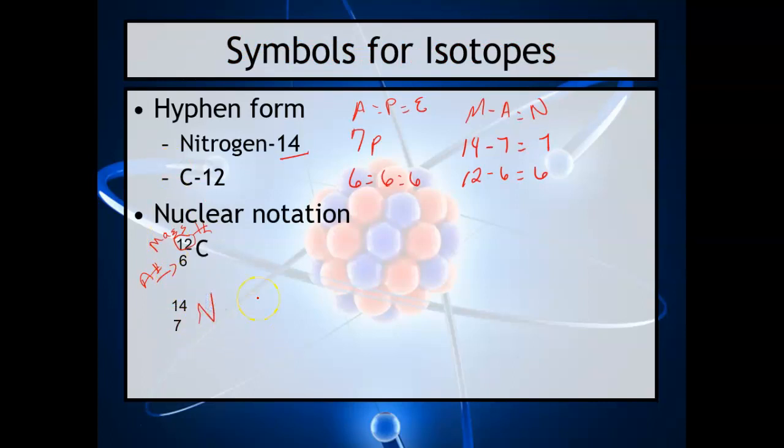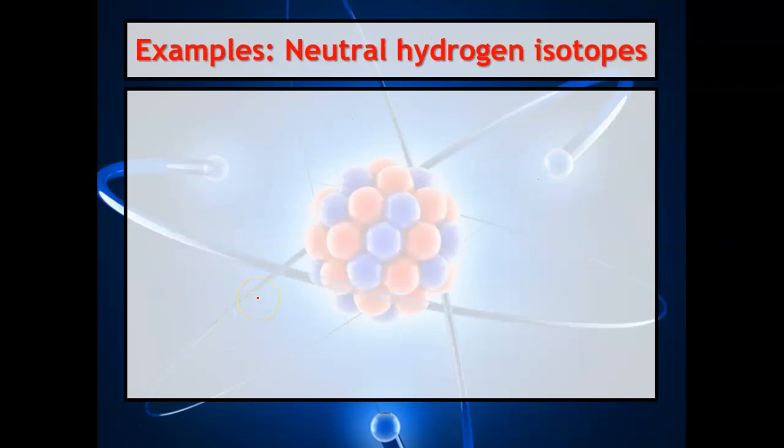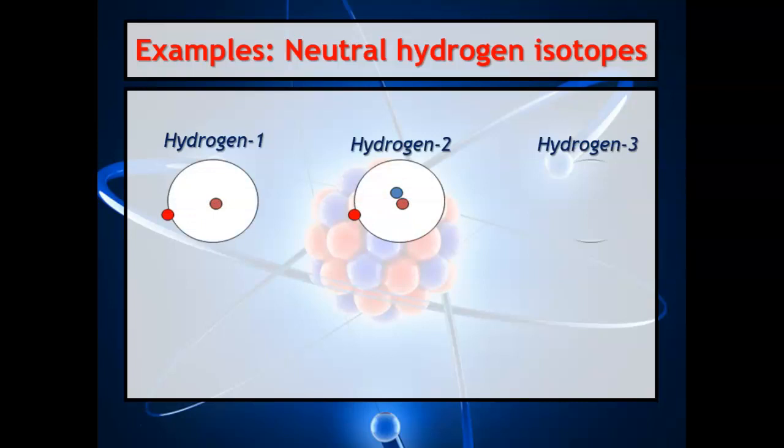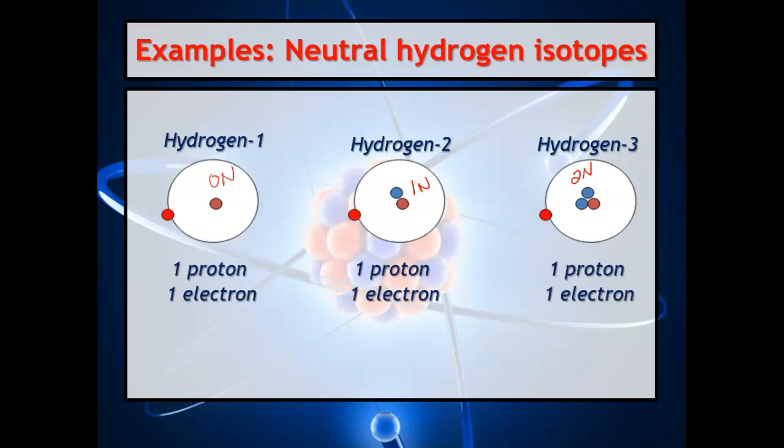So hydrogen: you can have three different hydrogens. The difference is this one has zero neutrons, this one has one neutron, and this has two neutrons. One proton in each one of them—the red one in the middle—and one electron.